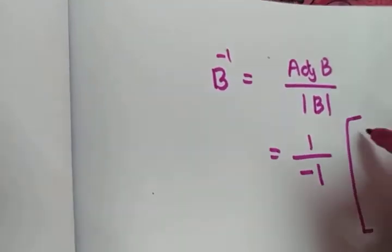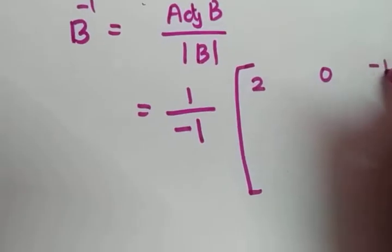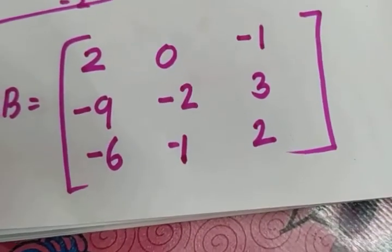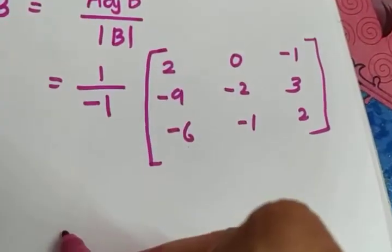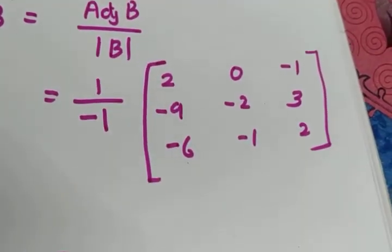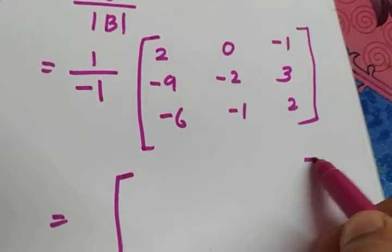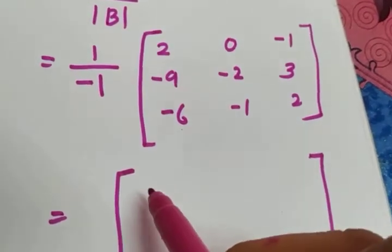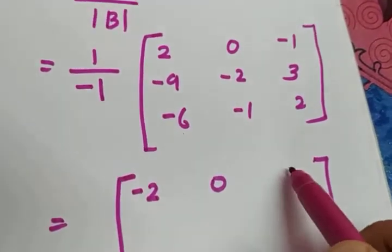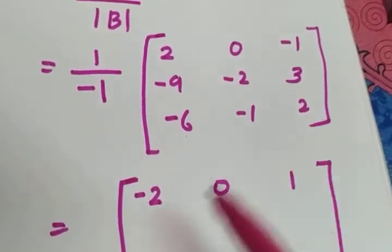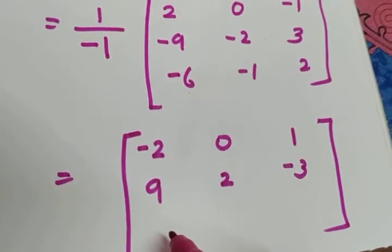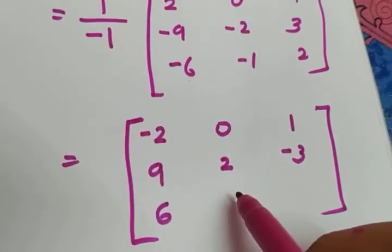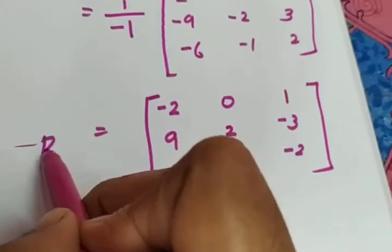So B inverse = (1 / -1) × adj(B) = (1/-1) × [2, 0, -1 / -9, -2, 3 / -6, -1, -2]. Instead of keeping the 1/(-1), it is better to give the negative sign to the matrix, so all terms change sign: [2, 0, -1] becomes [-2, 0, 1]; [-9, -2, 3] becomes [9, 2, -3]; [-6, -1, -2] becomes [6, 1, 2]. This is B inverse.